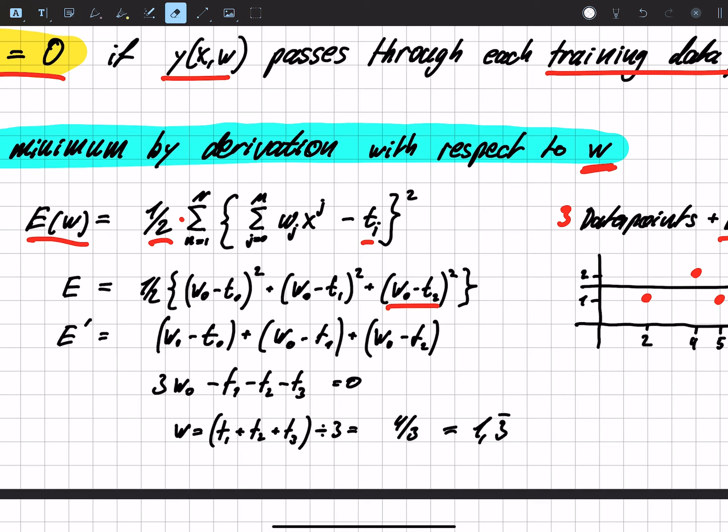So the next goal is to derive by w, because the w is the thing we want to find out, and now we have to derive it and get the minimum of the error function.